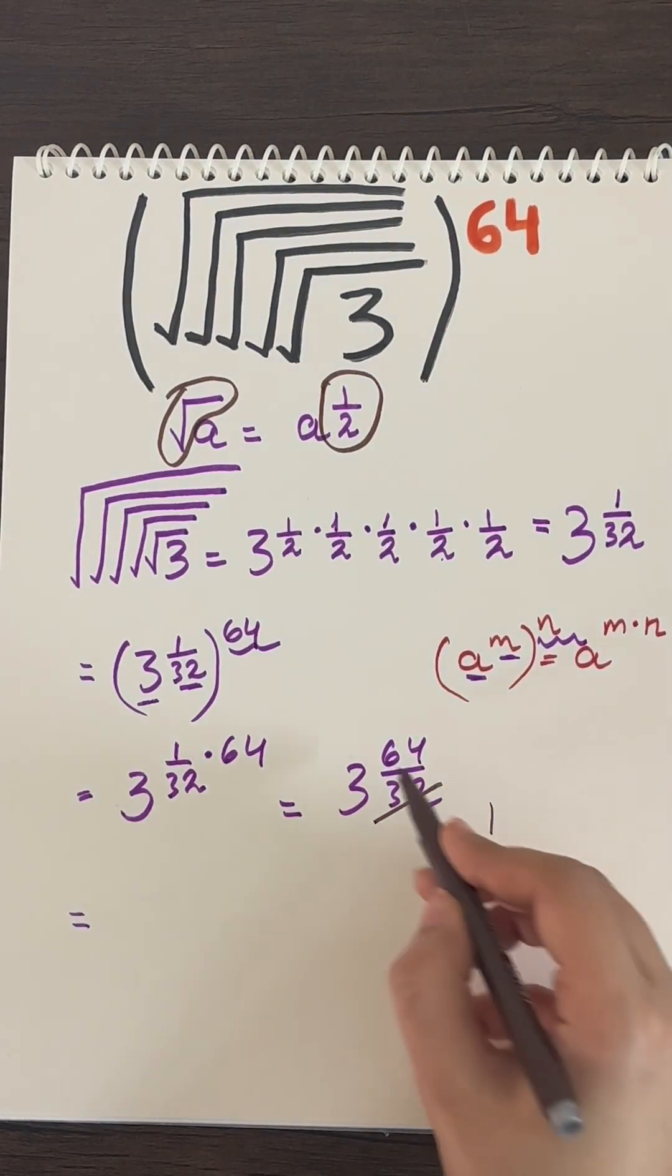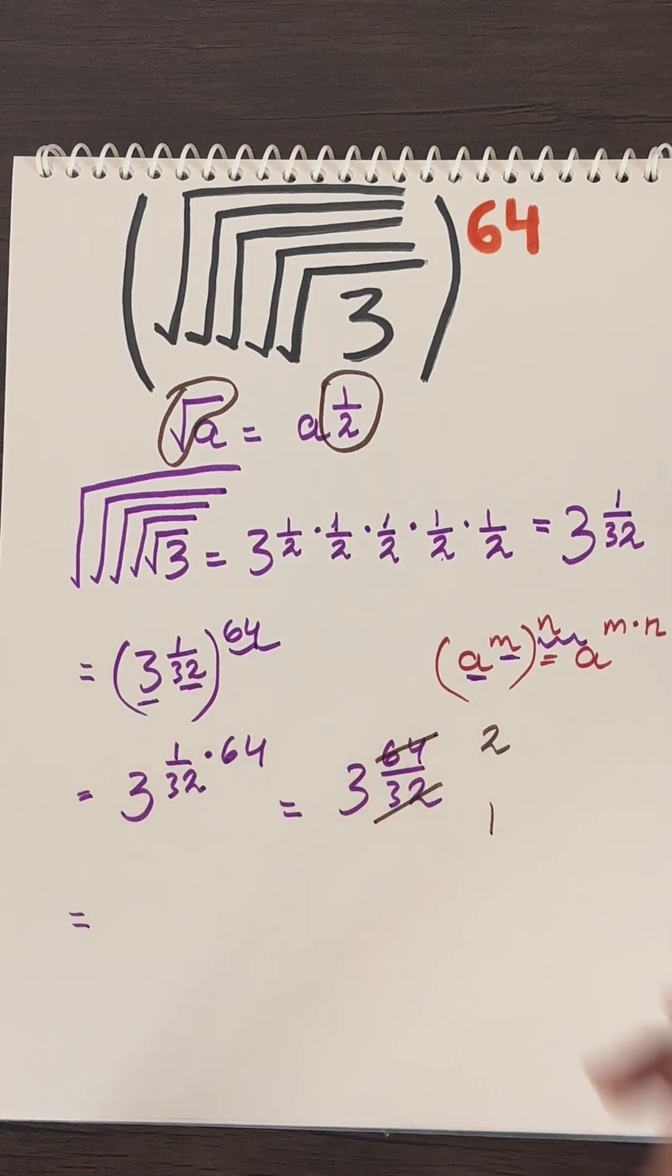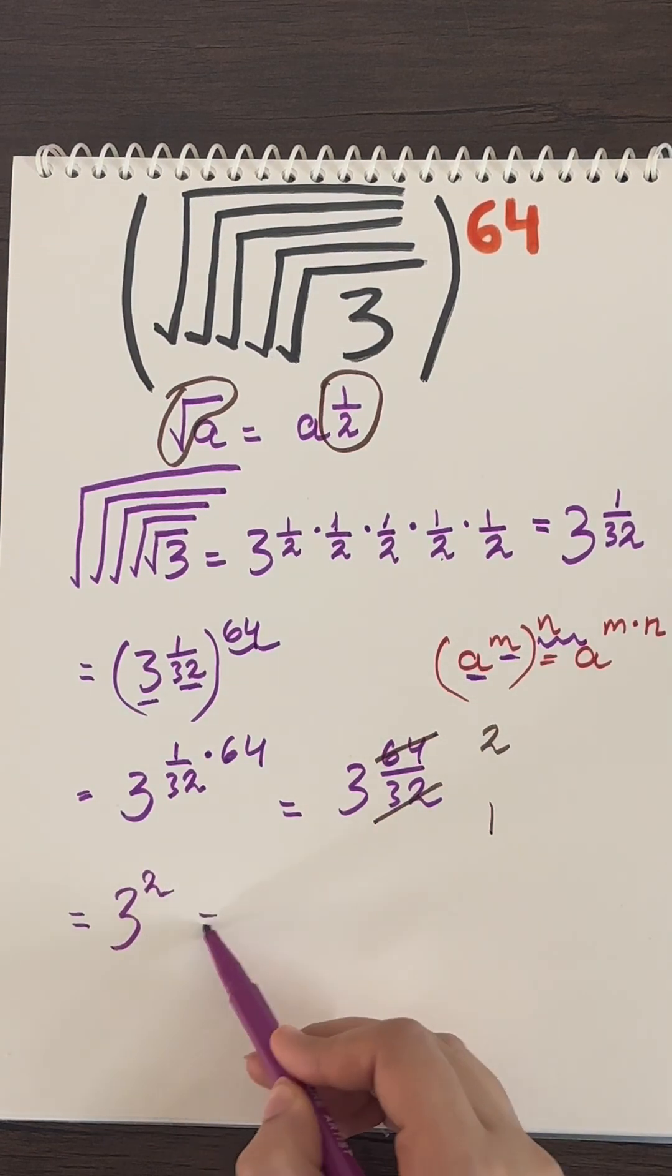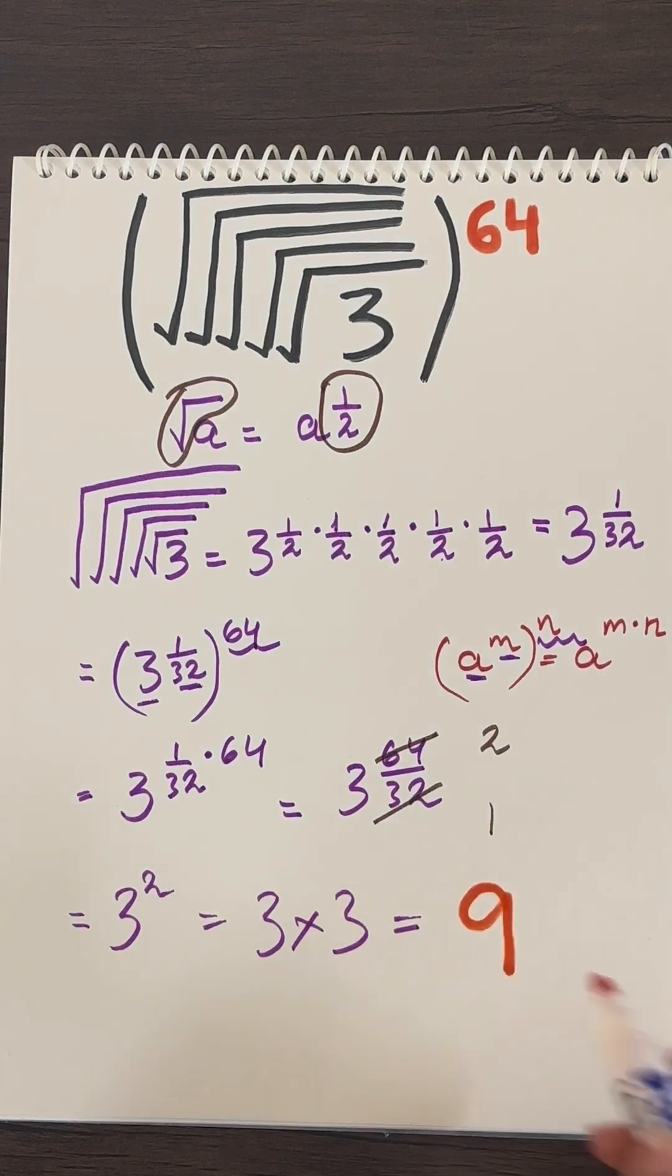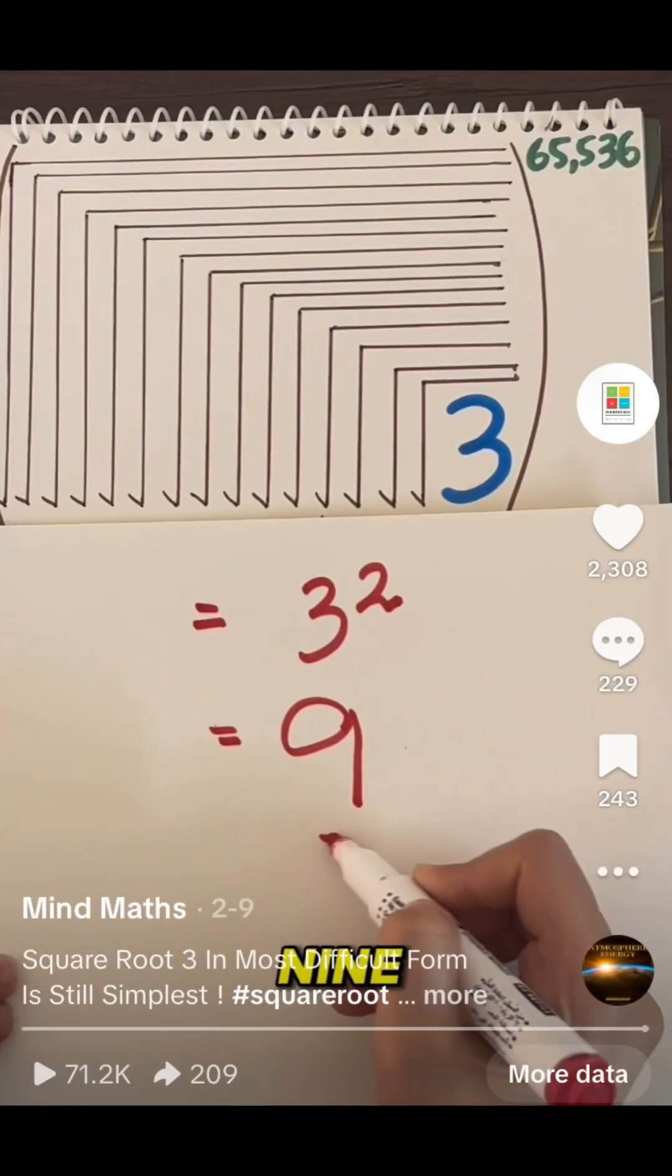Now we can simplify this further. After simplifying, we will be left with three raised to power two, and even a kid knows that this equals nine. And that's how so many nested roots of three always equals nine.